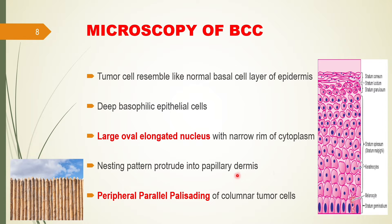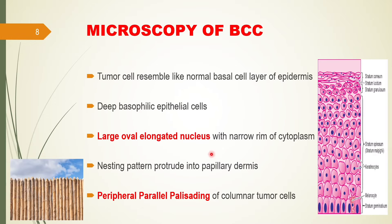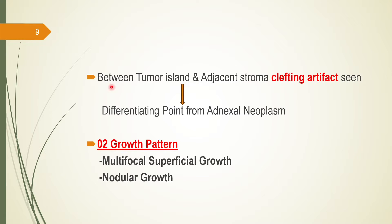The tumor cells show a nesting pattern and protrude into the underlying papillary dermis. The characteristic microscopic feature is peripheral palisading - the cells are arranged parallel to each other at the periphery. Columnar tumor cells with peripheral palisading are seen. In between the tumor island and the adjacent stroma, a clefting artifact can be seen due to shrinkage of the basal cell nest during tissue processing. This clefting artifact is a very important differentiating point from the adnexal neoplasm tricoblastoma, which is the close differential diagnosis.